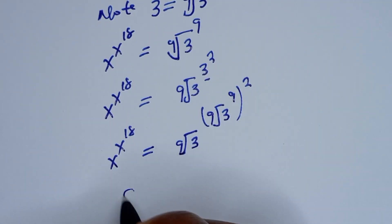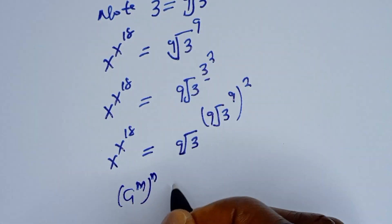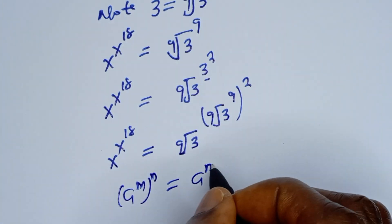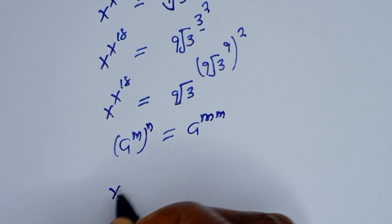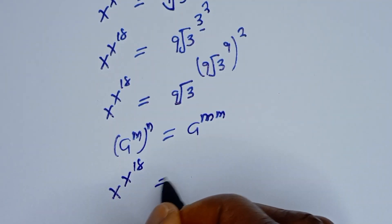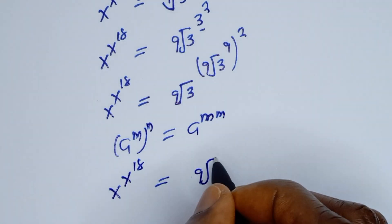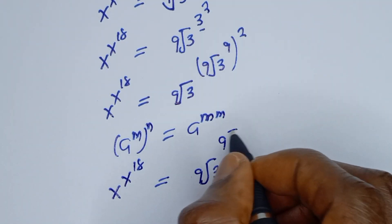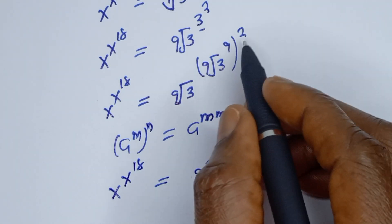Take note that if you have a to the power of m to the power of n, this is equal to a to the power of mn. Applying this rule, we have x to the power of 18 is equal to the 9th root of 3 to the power of the 9th root of 3, to the power of the 9th root of 3.